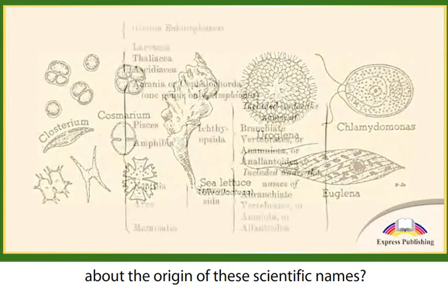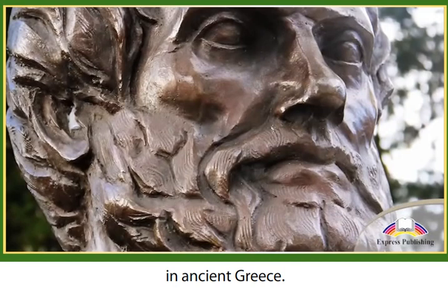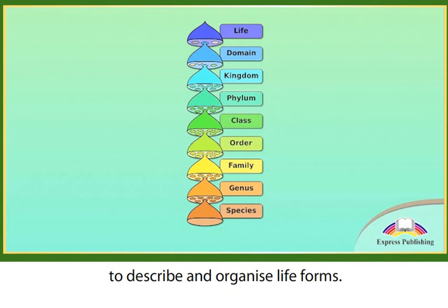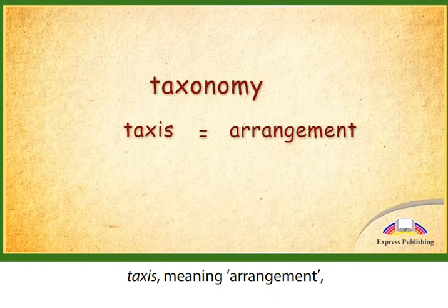Have you ever wondered about the origin of these scientific names? It dates all the way back to Aristotle in ancient Greece. Aristotle created the field of taxonomy to describe and organize life forms. The word comes from the ancient Greek words taxis, meaning arrangement, and gnomia, meaning method.